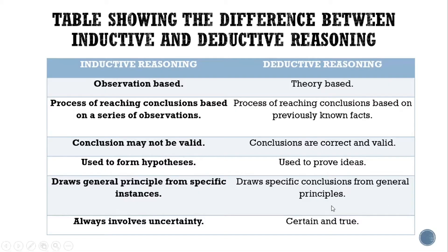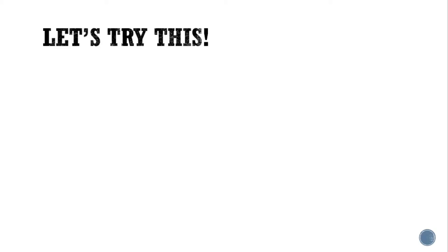And lastly, in inductive reasoning it always involves uncertainty, while in deductive reasoning it is always certain and true. I have some examples here — please pause the video for your thinking time before I reveal the answers.